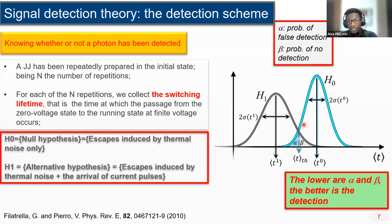We know that H0 is the hypothesis when the escapes are induced by thermal noise only, and H1 is the hypothesis when the escapes are induced by the joint action of the noise and the arrival of signal on the system. To decide between these two hypotheses, one places a threshold that reflects on alpha and beta, where alpha is the probability of false alarm, that is the detection of a photon while the switchings are induced by thermal activations, and beta is the probability of missing the signal, that is the photons are not detected and they are confused with the thermal activation. The lower alpha and beta, the better the detection.